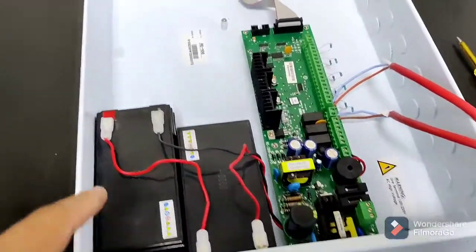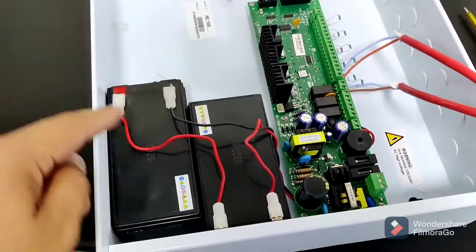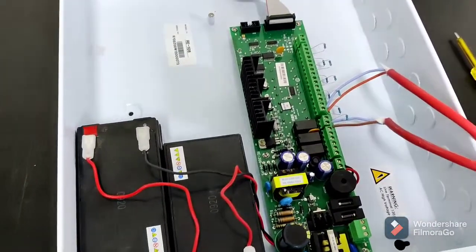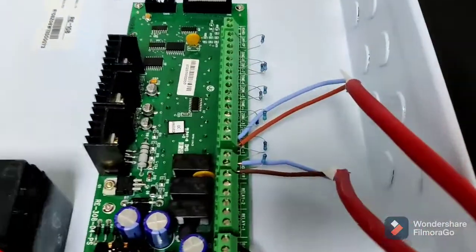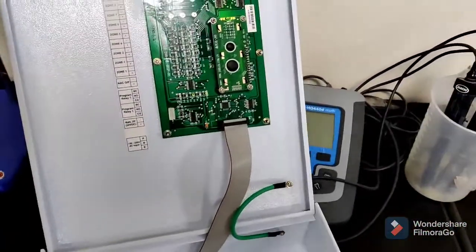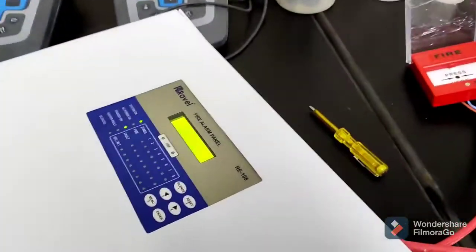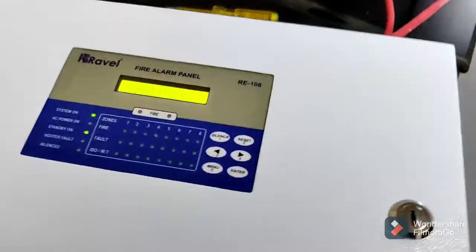Look at two batteries in series. If you put them in series, it will give you 24-volt DC supply. Now the connection is already done. Sounder is also connected to the hooter side and zone one is for the call point.